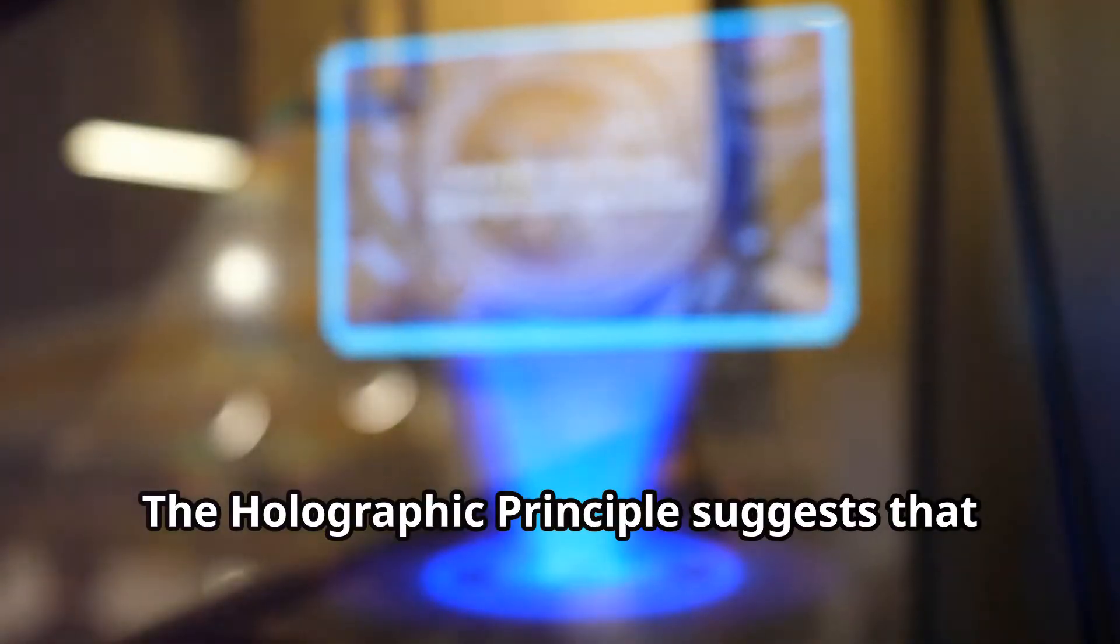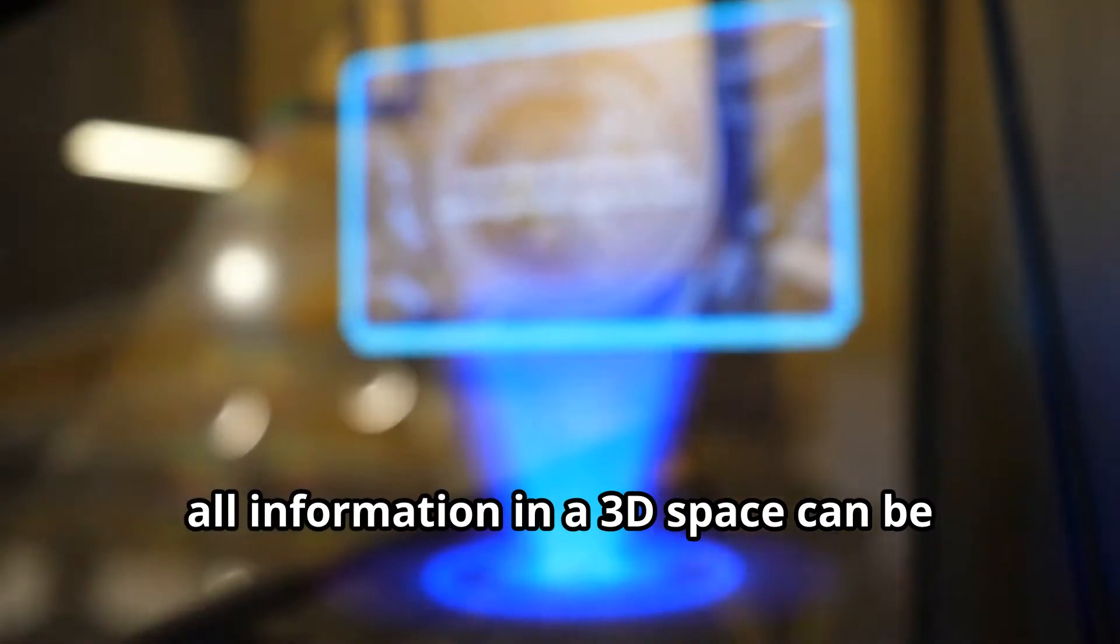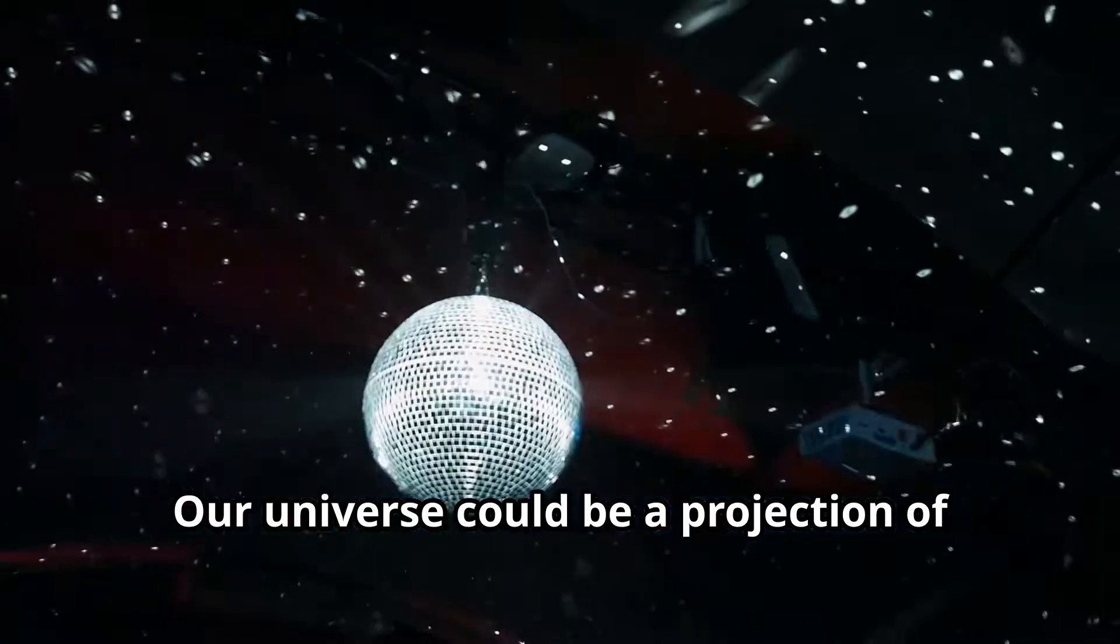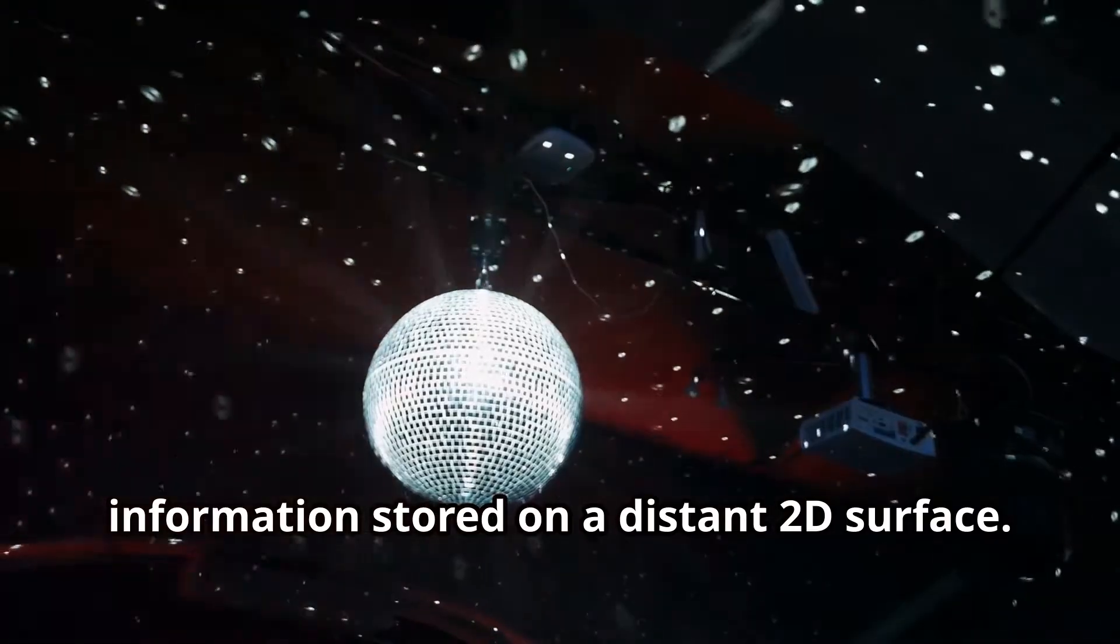The holographic principle suggests that all information in a 3D space can be encoded on a 2D surface. Our universe could be a projection of information stored on a distant 2D surface.